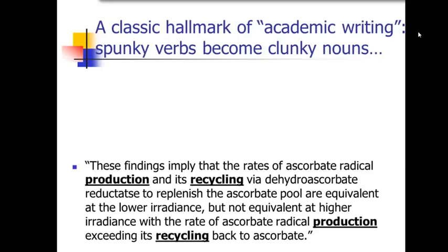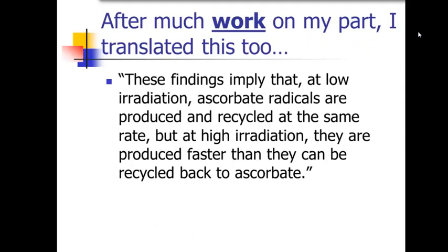And that second sentence suffers from the same problem — they have 'production' and 'recycling' rather than 'produce' and 'recycle.' So I took that second sentence and tried to translate it, to rewrite it into something readable and understandable. Here's what I came up with — it's really not the most exciting sentence ever, but at least it's understandable. It reads: 'These findings imply that at low irradiation, ascorbate radicals are produced and recycled at the same rate, but at high irradiation they are produced faster than they can be recycled back to ascorbate.' I stripped a lot of the extra words — cut it down to about half the size of the original — and turned those nouns 'production' and 'recycling' back into verbs, 'produced' and 'recycled.'